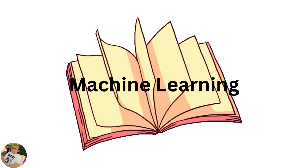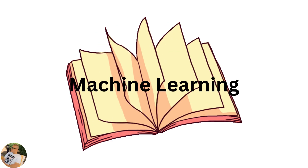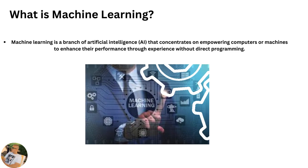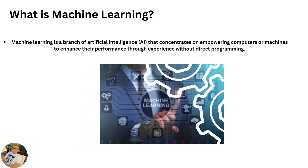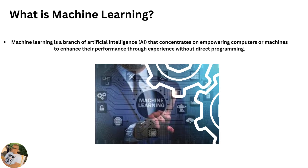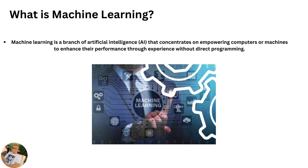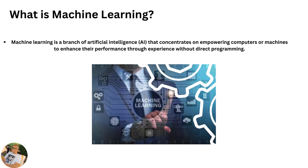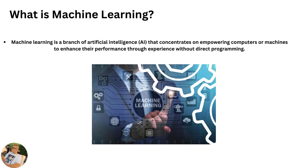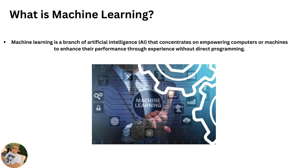Hello everybody. Today we talk about machine learning. Machine learning is a branch of artificial intelligence that concentrates on improving computers or machines to enhance their performance through experience, without direct programming.